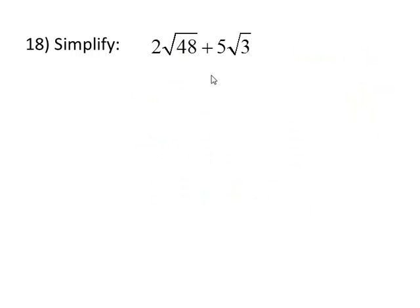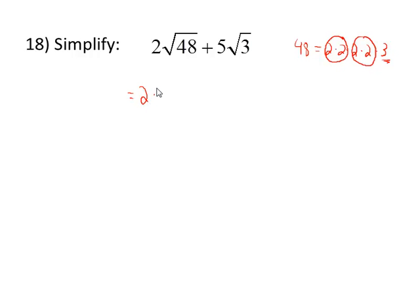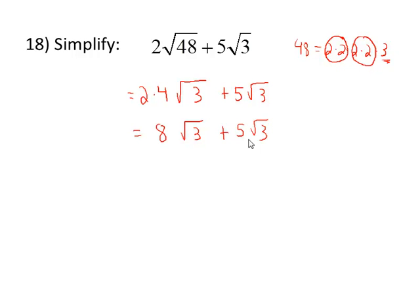In order to add or subtract radical expressions, they have to have the same radical — they have to be like radicals. Now the square root of 48 and the square root of 3 are not the same. But if we factor 48, we get 2 times 2 times 2 times 2 times 3. For square roots, I can take out 2 times 2 and be left with a 3 on the inside. So we'll begin by removing the 4 from the square root and leaving the 3 inside. We now notice that the two radicals are like radicals and can be combined. 8 square root of 3 plus 5 square root of 3 adds to be 13 square root of 3 — just like adding 8x plus 5x: combine the coefficients, leave the radical the same.